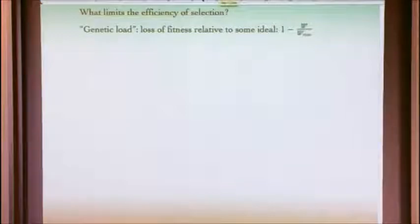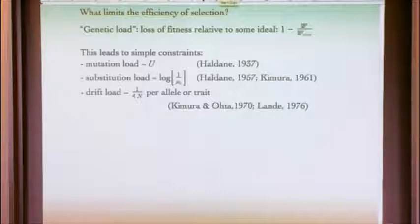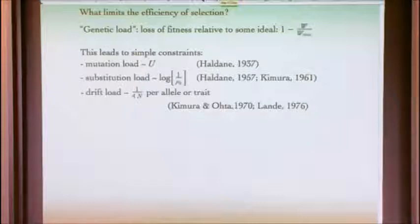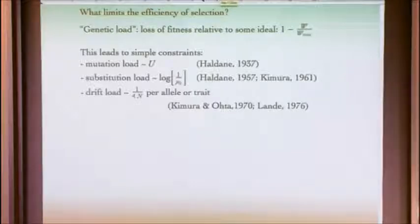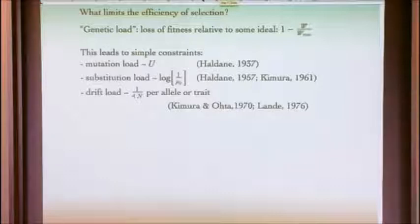These go back to the 1930s originally. Genetic load being defined as the loss of fitness relative to some ideal value, some maximal value. The idea is that if we can show that various processes of selection lead to a loss of average fitness, then we can use the fact that organisms have some maximum reproductive rate to set a balance on how much selection can be acting. The results that one gets are really quite nice results. They're independent of the actual nature and strength of selection.